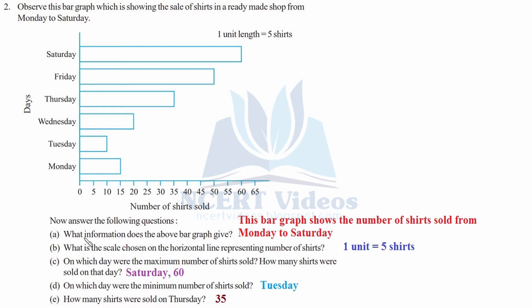Part A: what information does the graph give? This graph clearly shows the number of shirts sold from Monday to Saturday — number of shirts sold in a week. Part B: the scale chosen on the horizontal line representing number of shirts has unit length as five shirts.